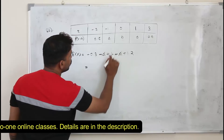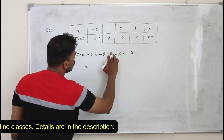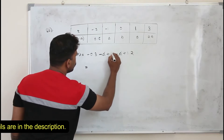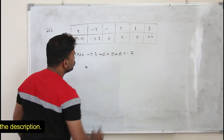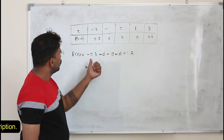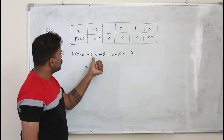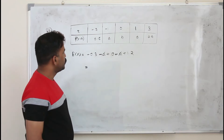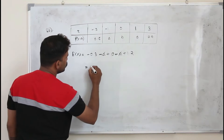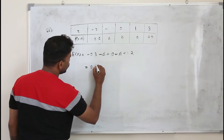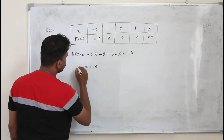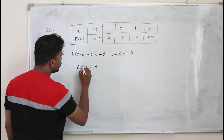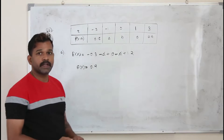Minus A plus A can be cancelled. 0 times B is not B, it's 0. So minus 0.3 plus 1.2, which will be 0.9. That's the value of E of x: 0.9.